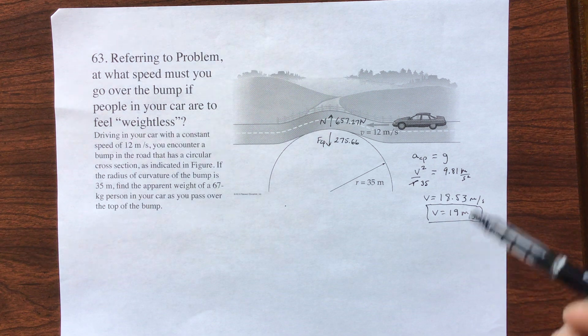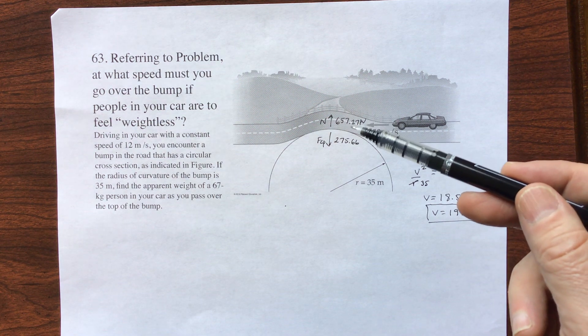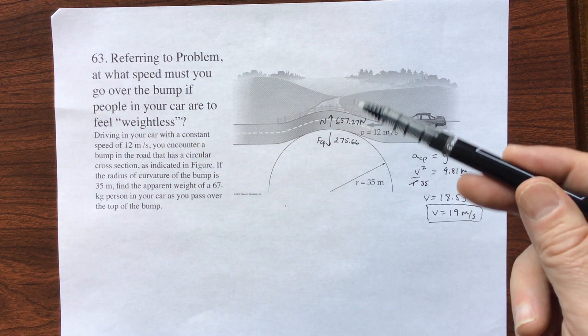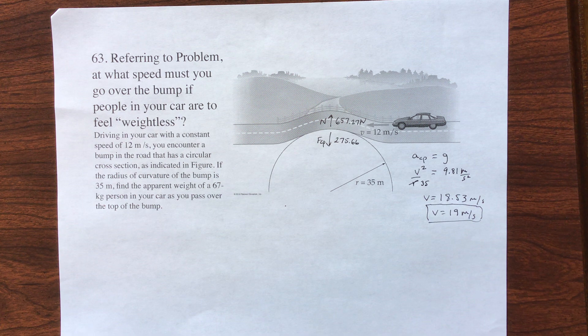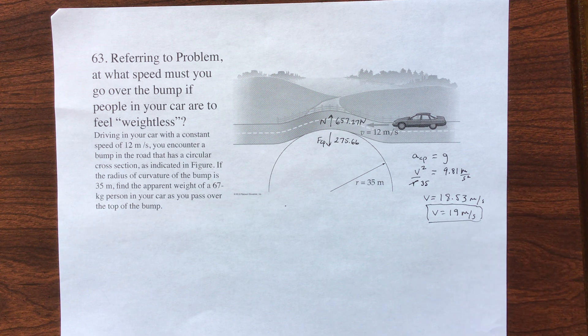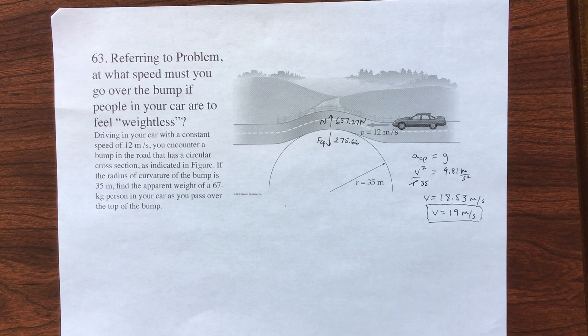You can also do it so that the normal force is going to equal zero. If your normal force is going to equal zero, because that's what's happening when you're weightless, you could find it a different way. I just think this is a little bit faster, but try it. See if you can do it two different ways. Make you smart.